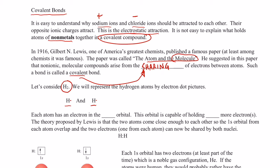What Gilbert and Lewis proposed is that those hydrogen atoms came close enough to each other to where their 1s orbitals, each with one electron in it, could overlap. And then they would be sharing between the two of them, two electrons.